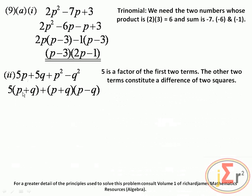We need to factorize completely, so the process continues. We find a common factor of (p plus q) in both terms. Separating the common factor and dividing through gives (p plus q) times the quantity: dividing 5(p plus q) by (p plus q) leaves 5, and dividing (p plus q)(p minus q) by (p plus q) leaves (p minus q). The fully factorized result is (p plus q)(5 plus p minus q).